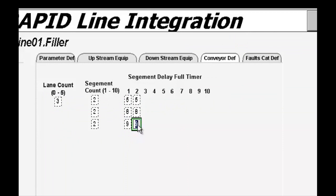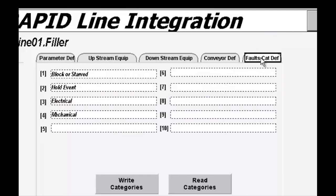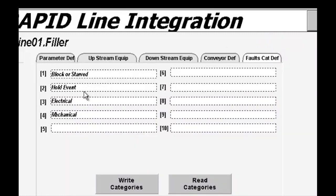We will move this back to zero since there are no conveyors on this particular machine. And then finally, fault categories. Individual machines gather fault data, and that data can be categorized. In this case, we can have electrical, mechanical, or even add a fifth process state. Each of the alarms is provided in categories.